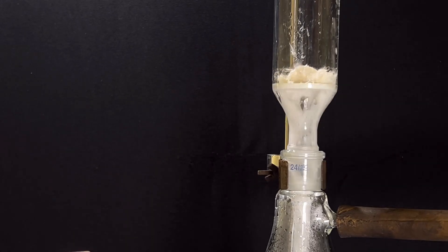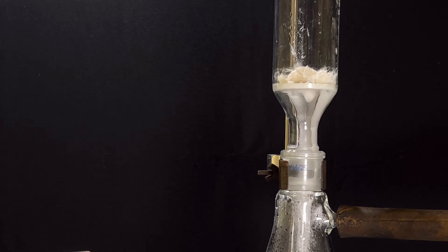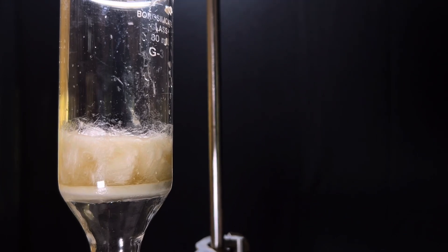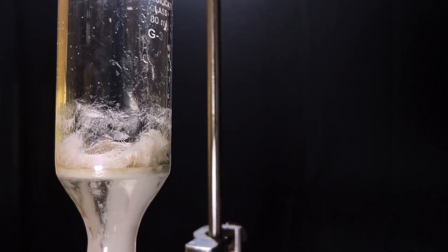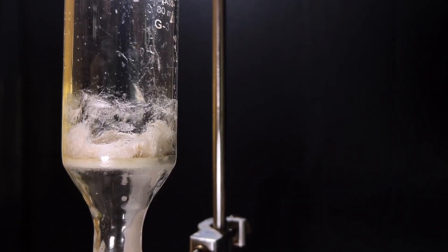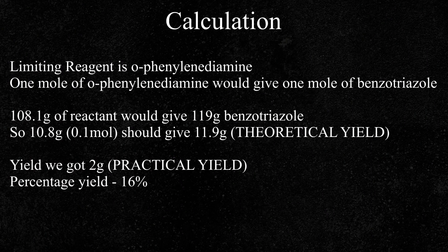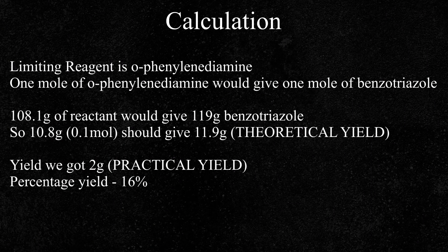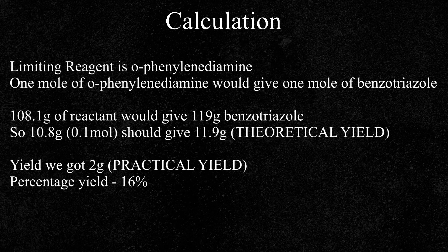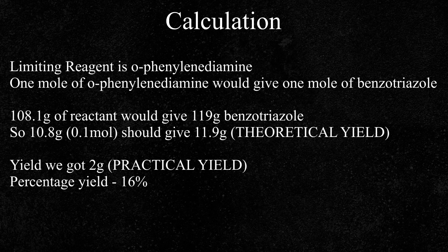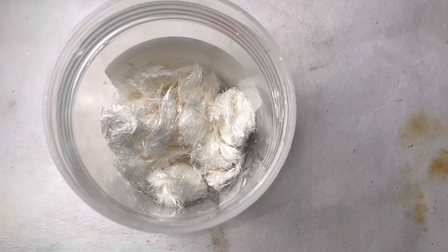The yield after second recrystallization was terrible, 2 grams only. The theoretical yield is 11.9 grams and the percentage yield was 16% after two recrystallizations. Anyway, after two recrystallizations we were able to obtain much purer product and the crystals were also beautiful. So I am willing to sacrifice the yield to see the beautiful product.